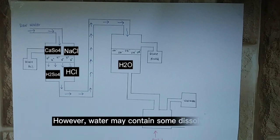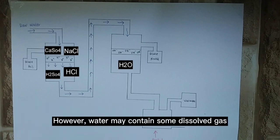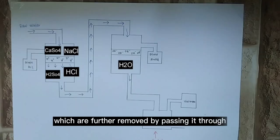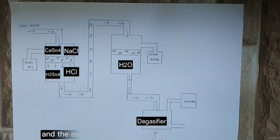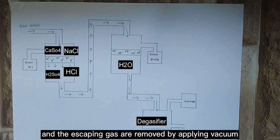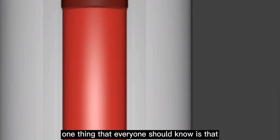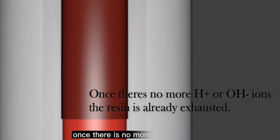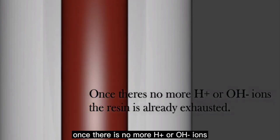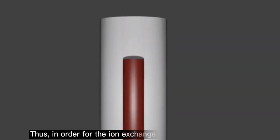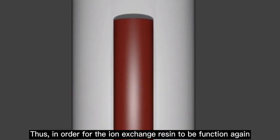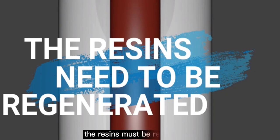However, water may contain some dissolved gases which are further removed by passing it through a degasifier where it is heated and the escaping gases are removed by applying vacuum. One thing everyone should know is that once there are no more H-plus or OH-minus ions, the ion exchange resin is already exhausted. Thus, in order for the ion exchange resins to function again, the resin must be regenerated.